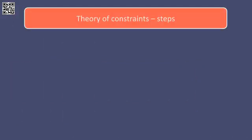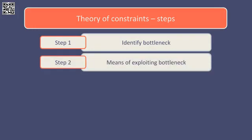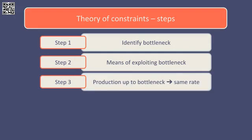There are five main steps in the theory of constraints process. Step one is to identify the bottleneck or constraint. Step two is to decide the best means of exploiting the bottleneck — in other words, make sure that output is maximised at the bottleneck. Step three is to ensure that production up to the bottleneck is at the same rate as after the bottleneck, so that work in progress does not build up.